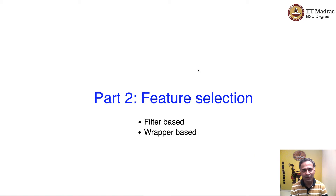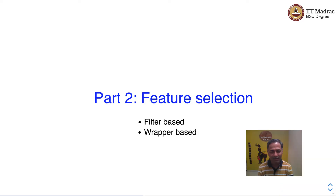Namaste! Welcome to the next video of the machine learning practice course. In this video, we'll discuss feature selection APIs in sklearn. There are two types of feature selection APIs: one is filter based and the second is wrapper based.